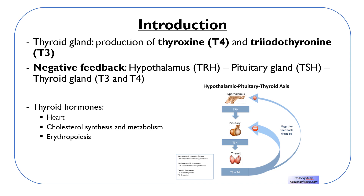The primary function of the thyroid gland is to produce active thyroid hormones, T4 and T3. Thyroid hormone production is controlled primarily by negative feedback. The hypothalamus creates TRH, which stimulates specific anterior pituitary cells to promote synthesis and secretion of TSH.